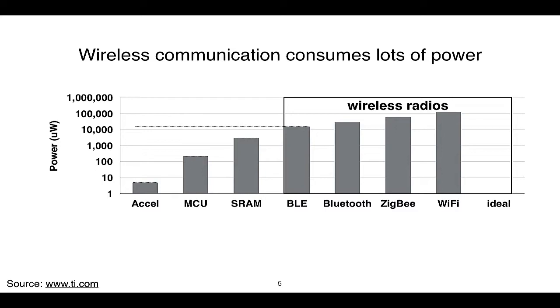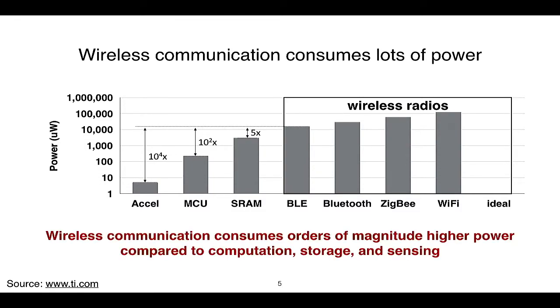Even the most power-efficient radio — Bluetooth Low Energy — consumes four orders of magnitude more power compared to a simple accelerometer sensor, two orders of magnitude more compared to the microcontroller, and five times more than RAM. As a result, the wireless radio has become the bottleneck of running the embedded system. Ideally, we want a wireless radio that consumes hundreds of microwatts of power. With such a radio, we could run the system for a long time, and in some cases perhaps not even need a battery.